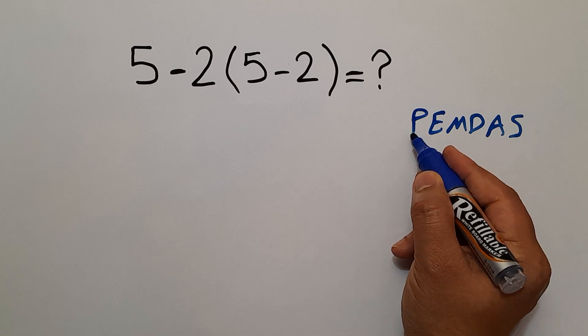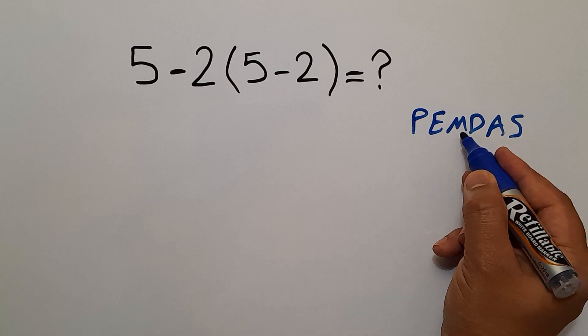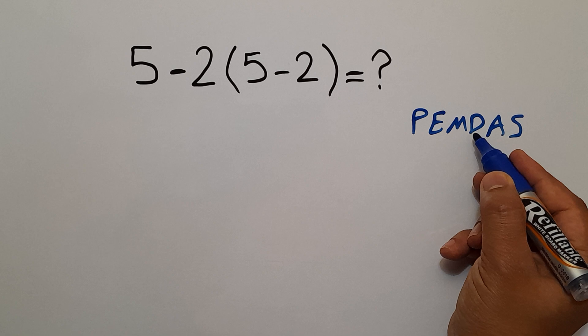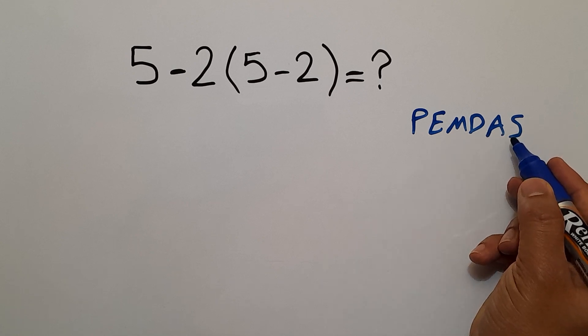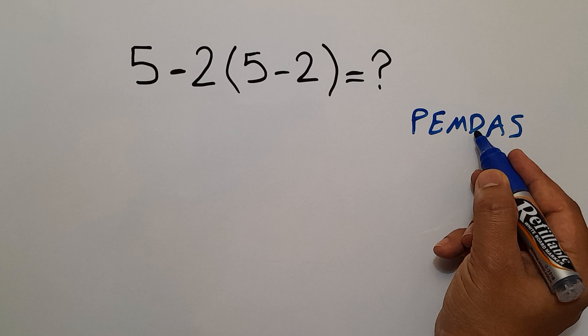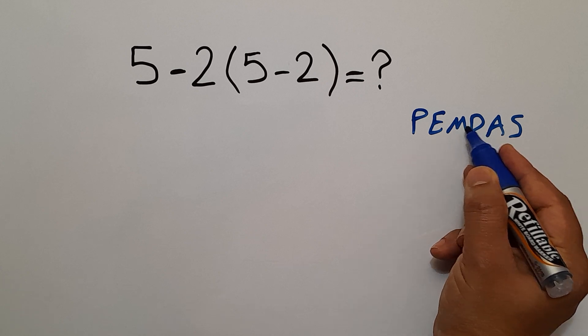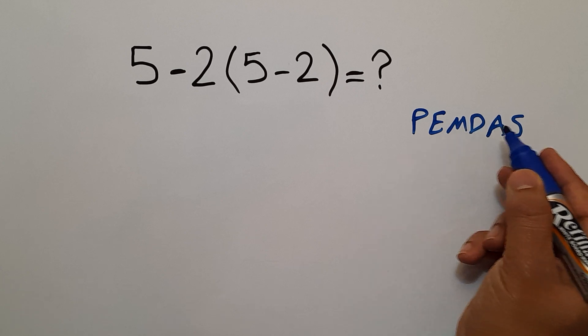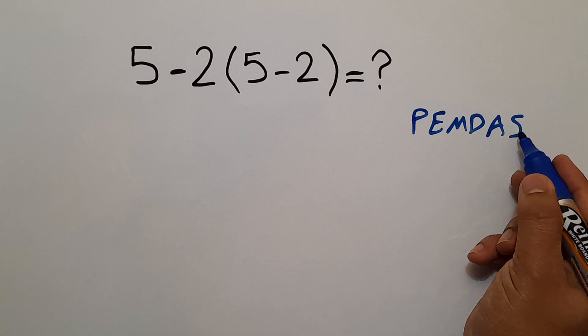We first do parentheses, then exponents, then multiplication and division, and finally addition and subtraction. Remember that multiplication and division have equal priority and we work from left to right. And the same applies to addition and subtraction.